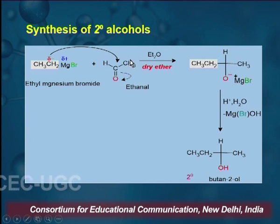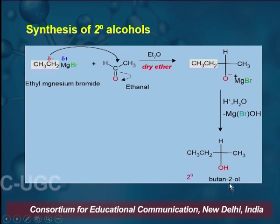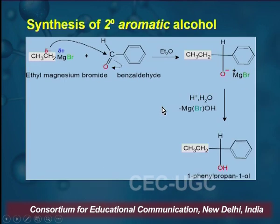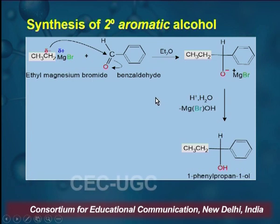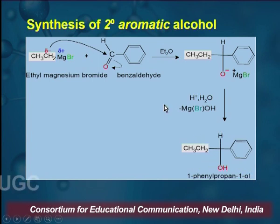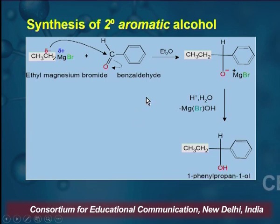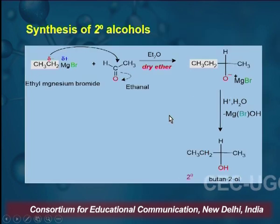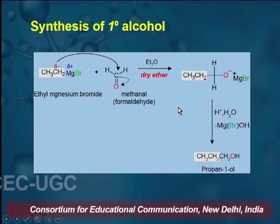For example, if you react with propanol, instead of CH₃ we will have CH₂CH₃ — that is ethyl — giving pentane-3-ol. Next is synthesis of secondary aromatic alcohol: benzaldehyde with ethyl magnesium bromide results in the Grignard Reagent followed by hydrolysis, giving the corresponding secondary aromatic alcohol. The ethyl part can be changed to larger alkyl groups — propyl, butyl, etc. This provides an excellent synthetic route for the preparation of secondary aliphatic or aromatic alcohols.